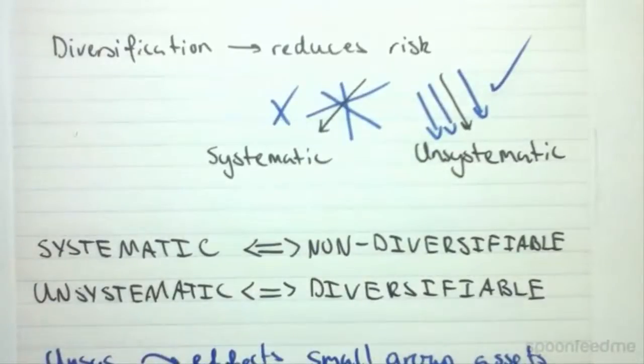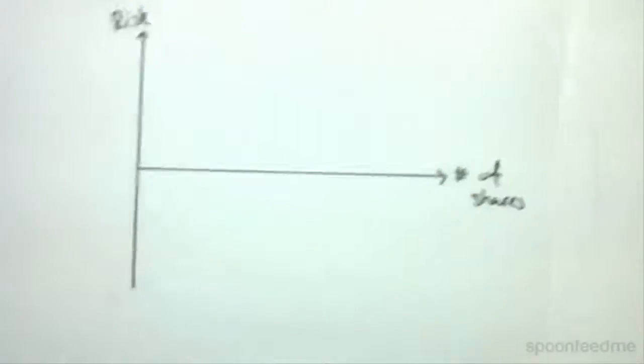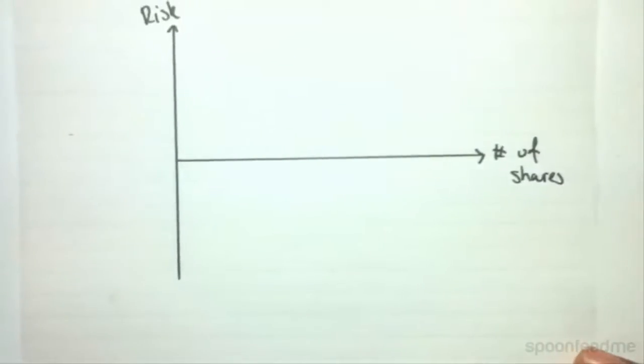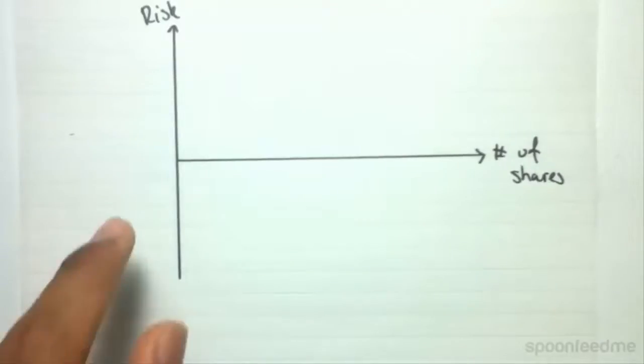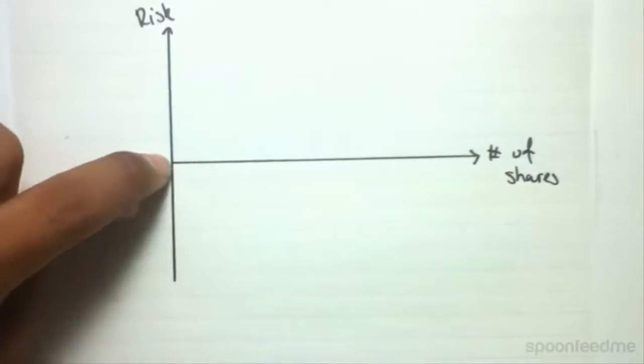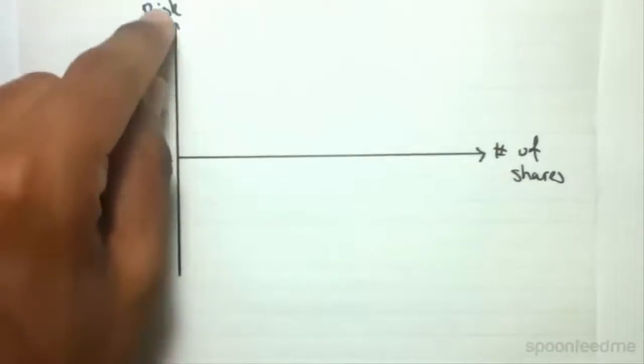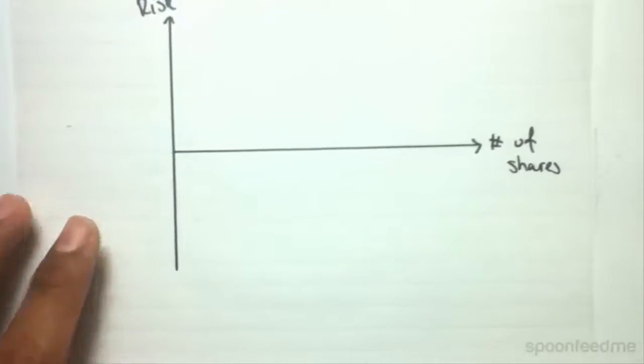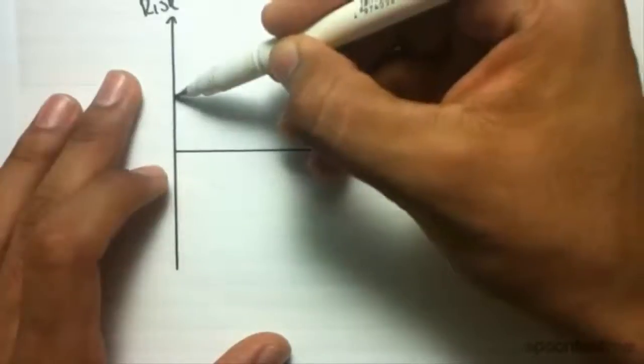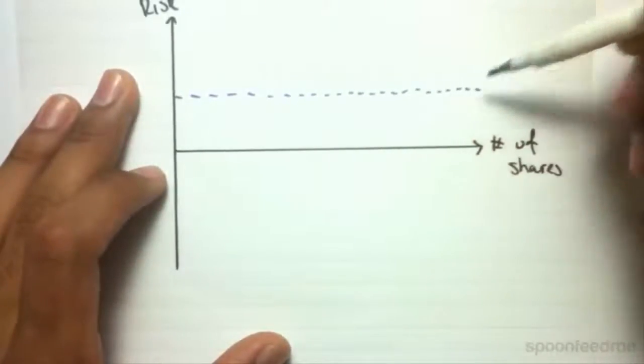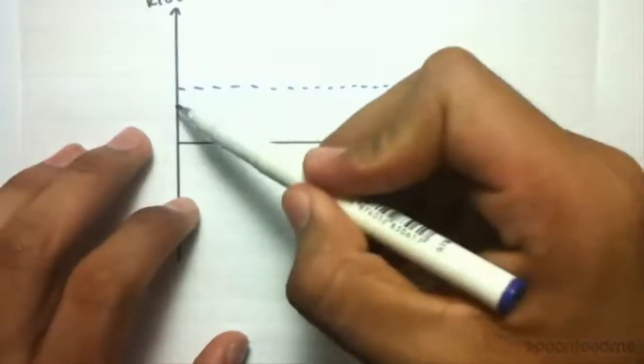Now what I'm going to do is draw a graph and we're going to show how diversification flows with considering risk and the number of shares. So on the x-axis we have the number of shares, which will increase as we go towards the right, and on the y-axis we have risk, which will increase as we go upwards.